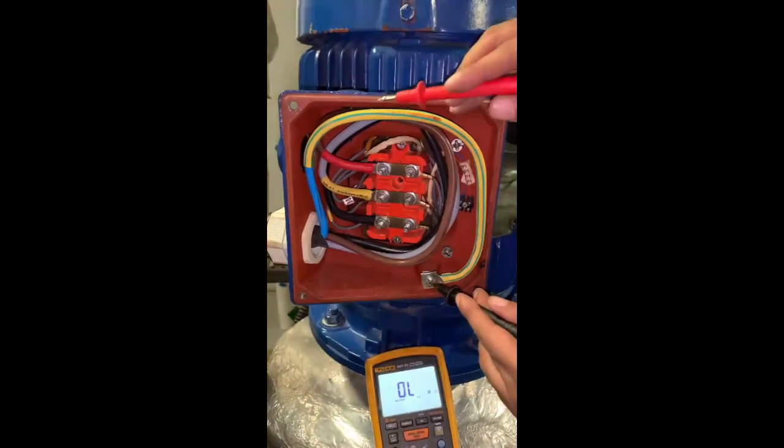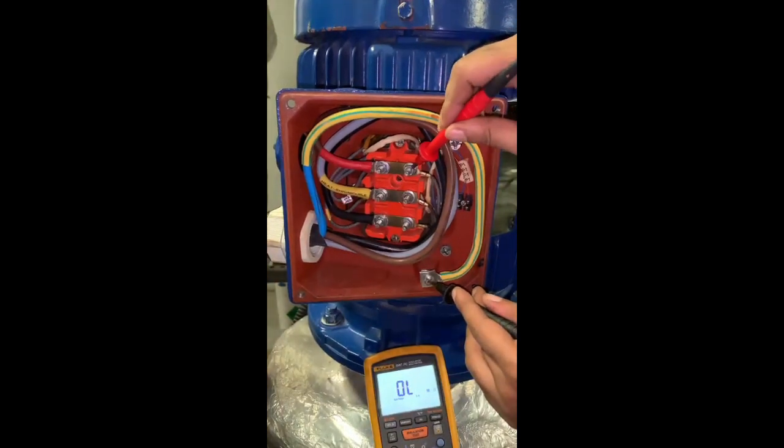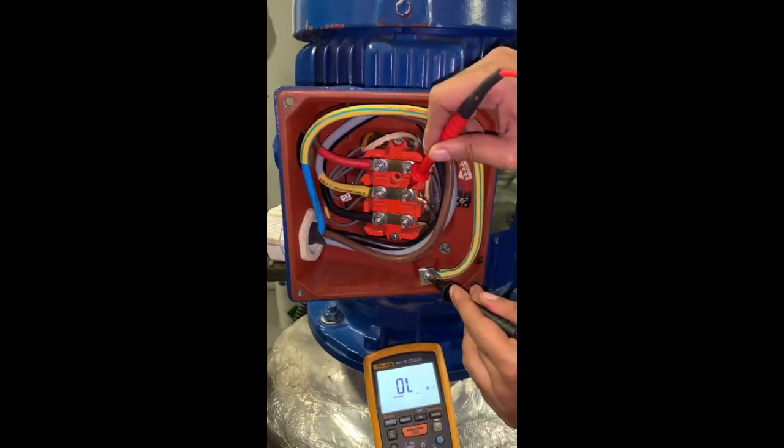The second step is to check the insulation using the multimeter. All terminals should not read with the earth, as shown in the example.